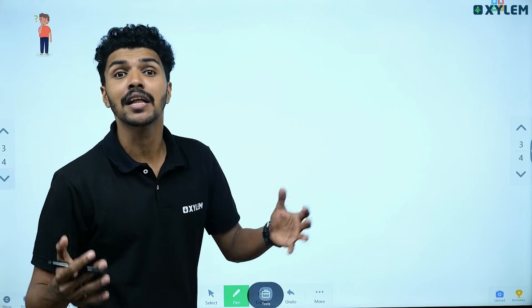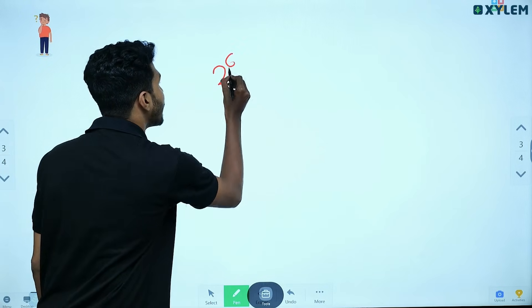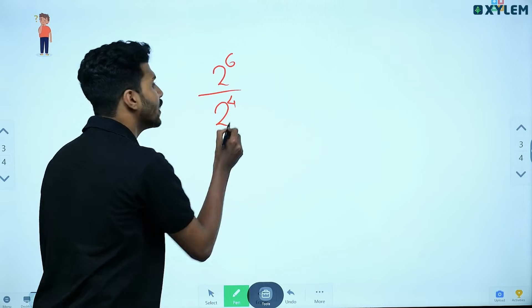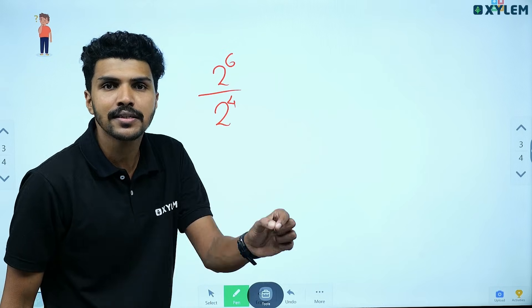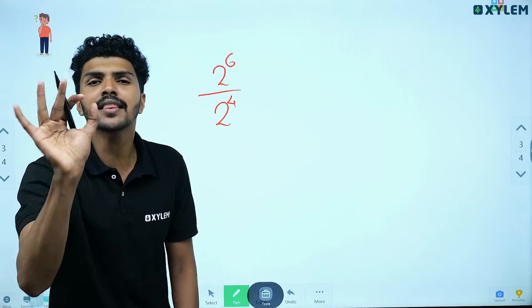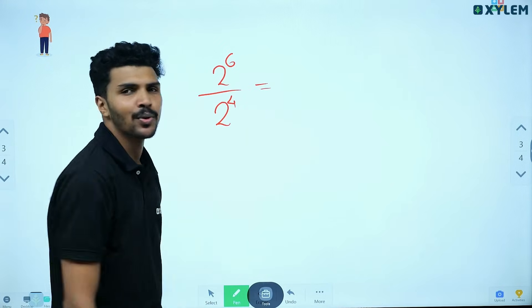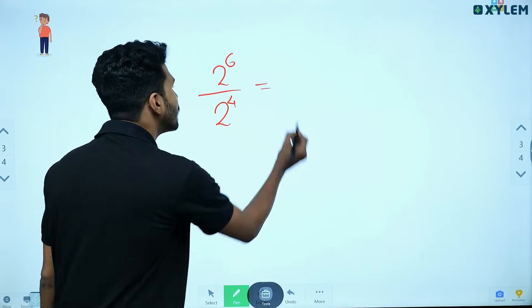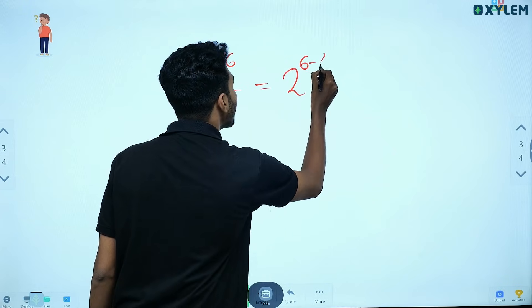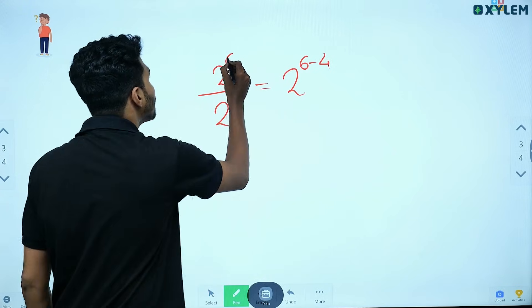How do you divide powers? Now, if you divide 2 raised to 6 by 2 raised to 4, you apply 2 raised to 6 minus 4.